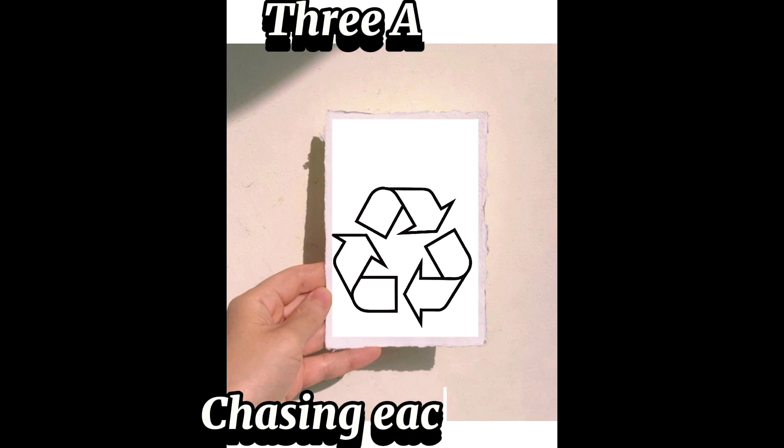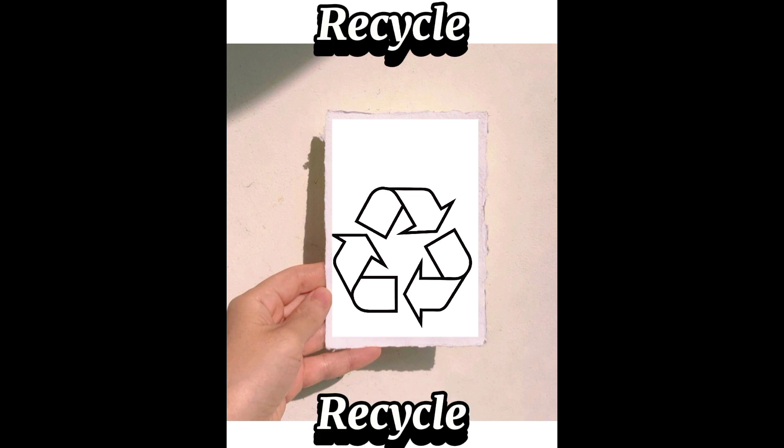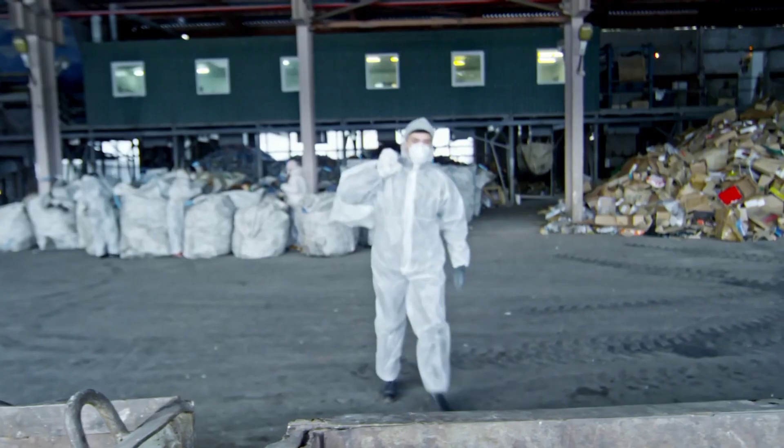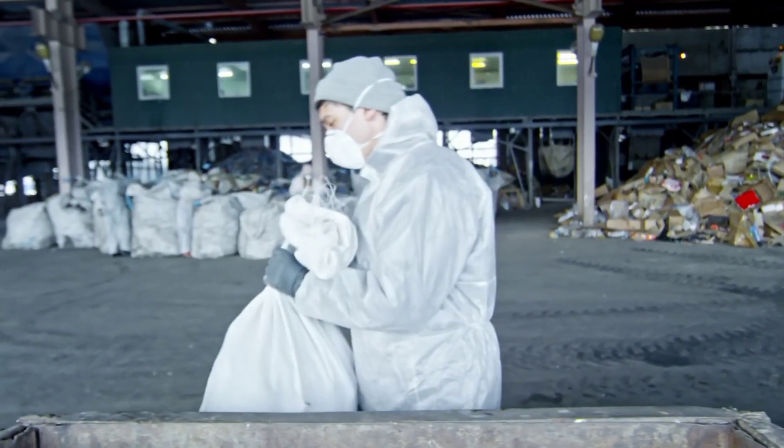At number 3 is the three arrows chasing each other. This symbol signifies that the packaging can be recycled. The arrows chasing each other represent the continuous cycle of recycling. The design for the recycling symbol was chosen through an international competition in 1970.